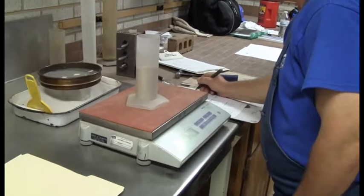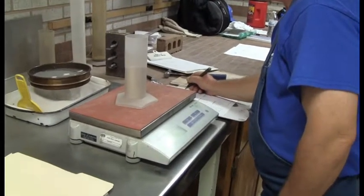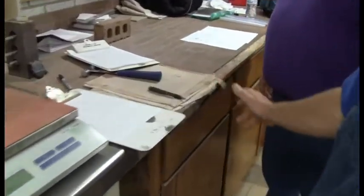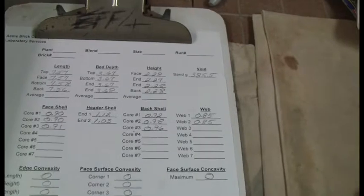So, he gets a weight and records that. What does it say? 385.5 grams. It's normal for a modular brick. And you've got this on your sheet, and this is the same sheet we just used to measure the dimensions of the brick as well.